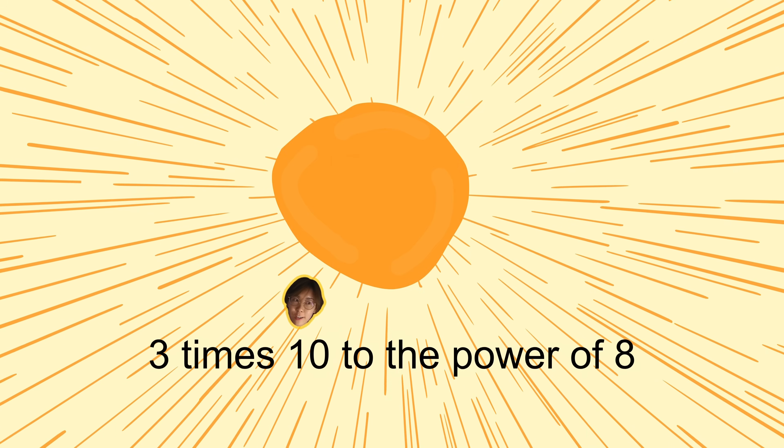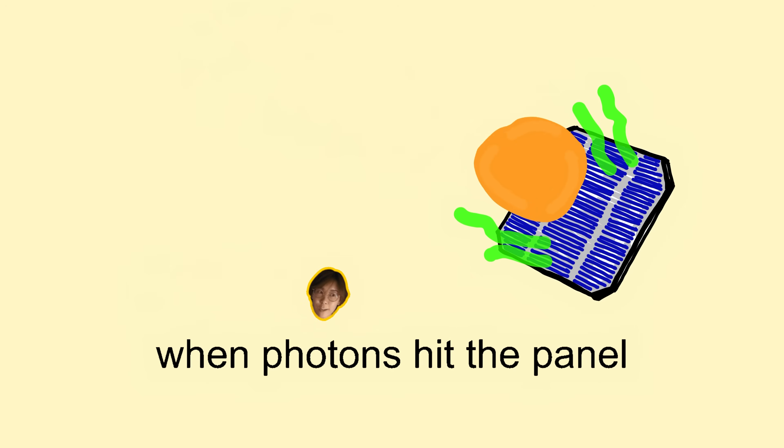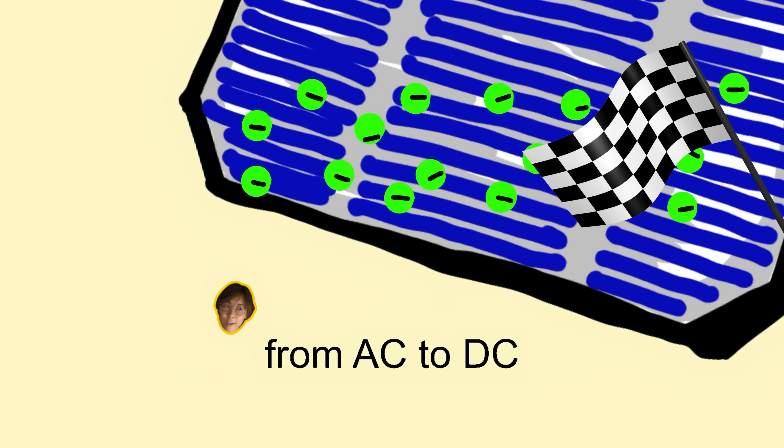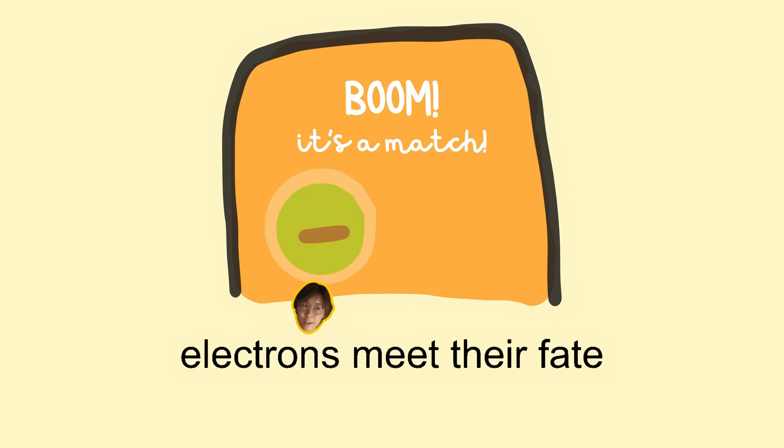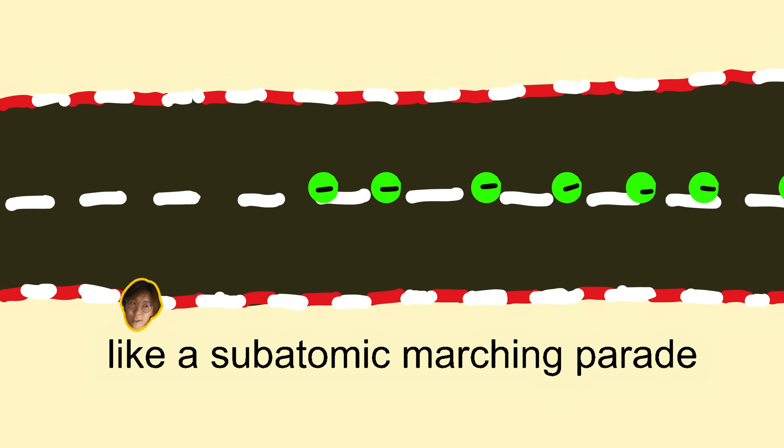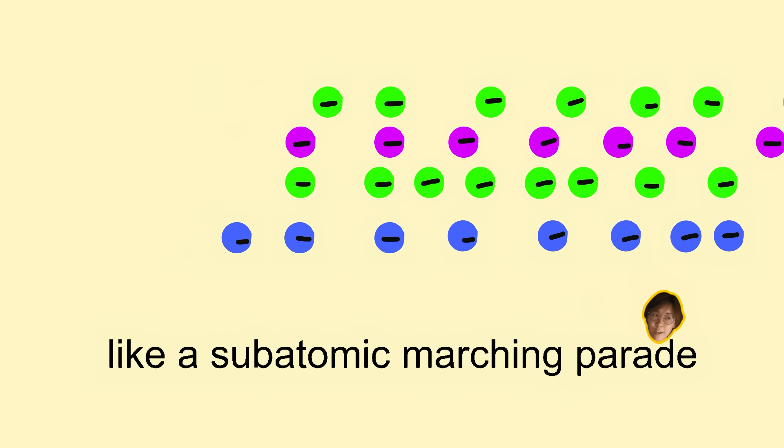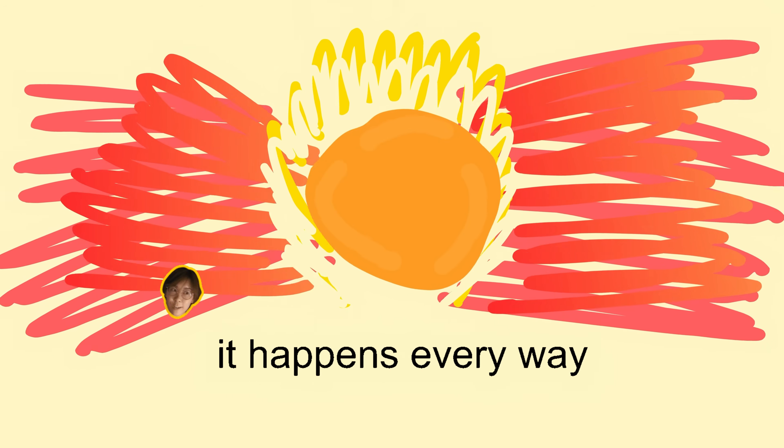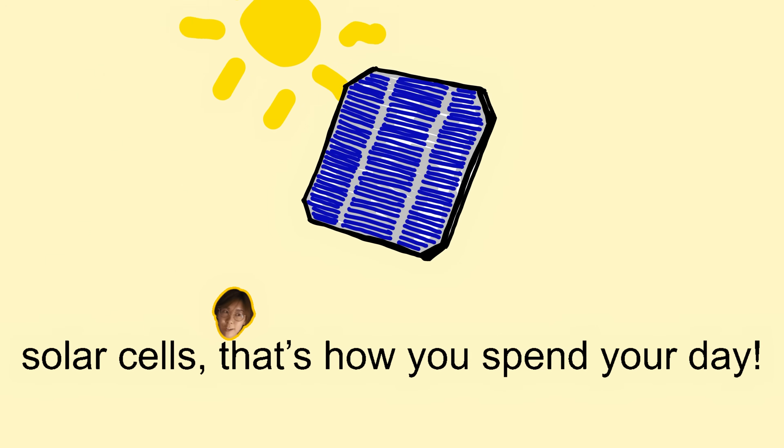Three times ten to the power of eight. When photons hit the panel, electrons start to race from AC to DC, electrons meet their fate on a one-way track like a subatomic marching parade. Oh, photons to power, it happens every day. Solar cells, that's how you spend your day.